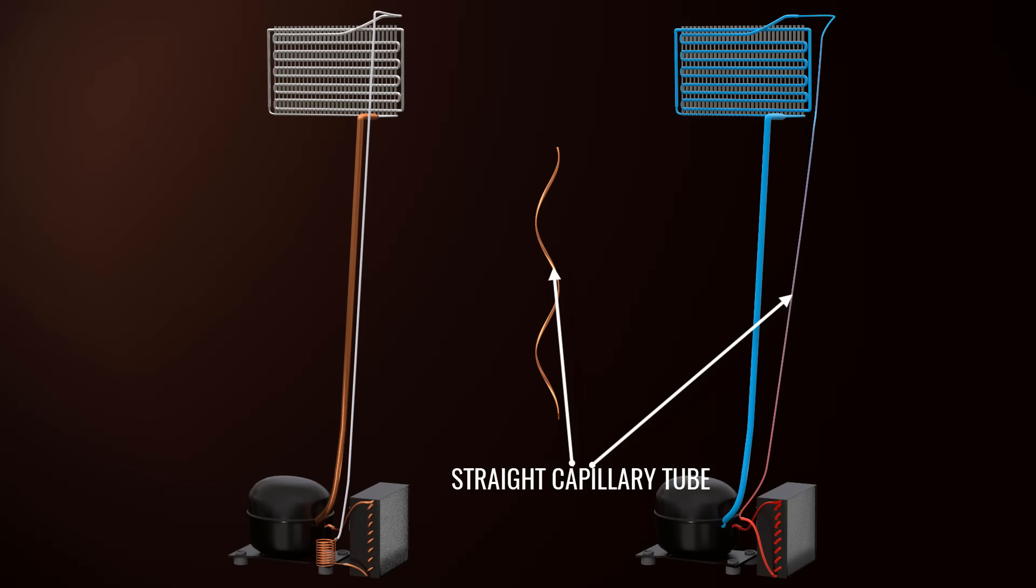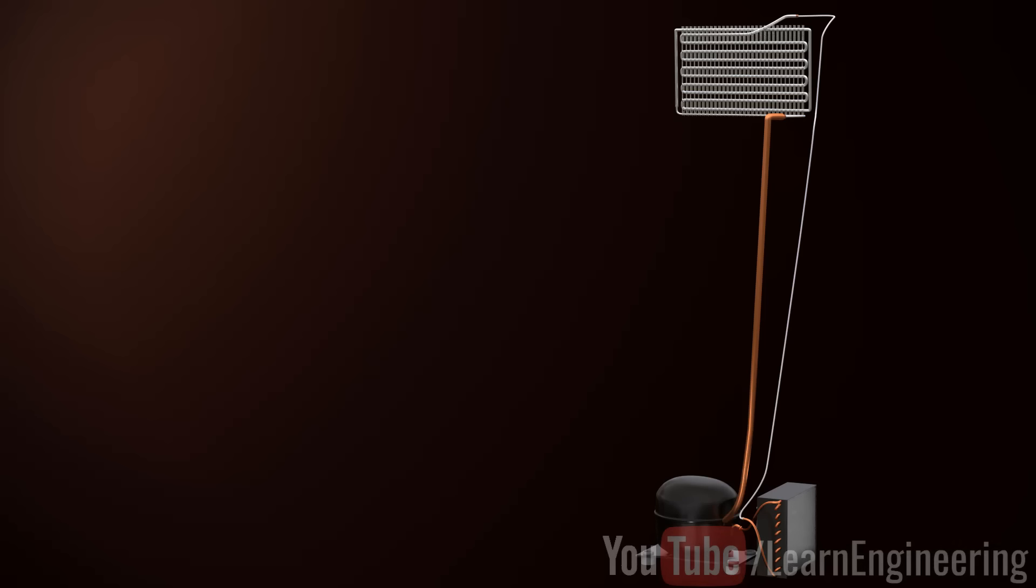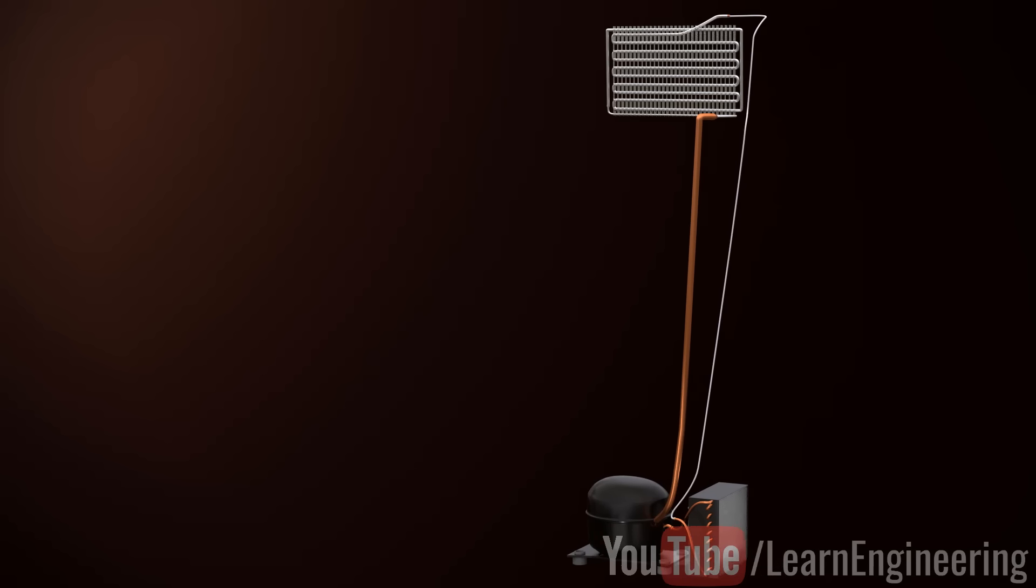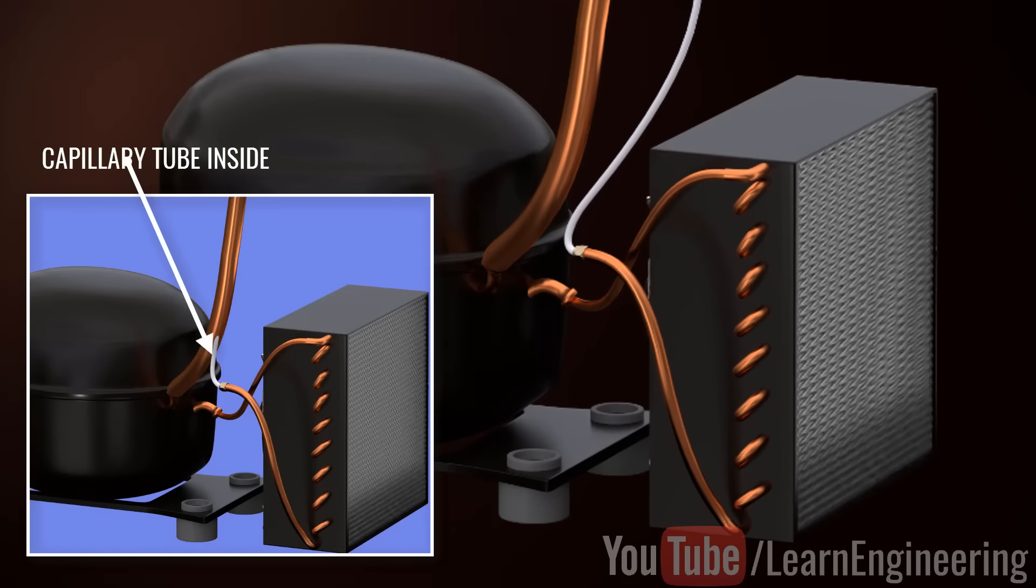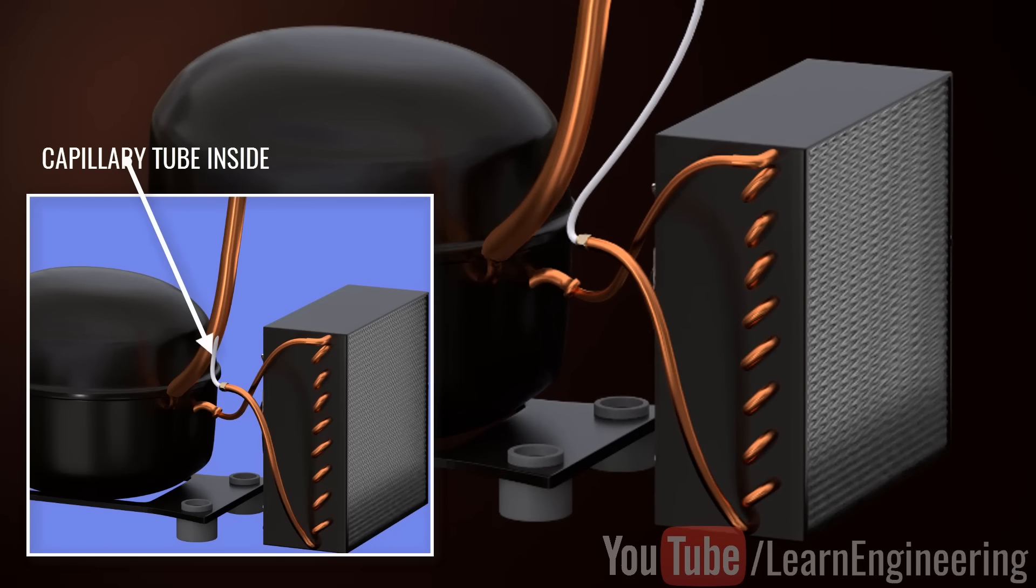Temperature variation in the new, straight capillary tube is depicted here. You see only one line on your home refrigerator because this straight capillary tube runs inside the evaporator exit coil. This simple technique has major advantages.